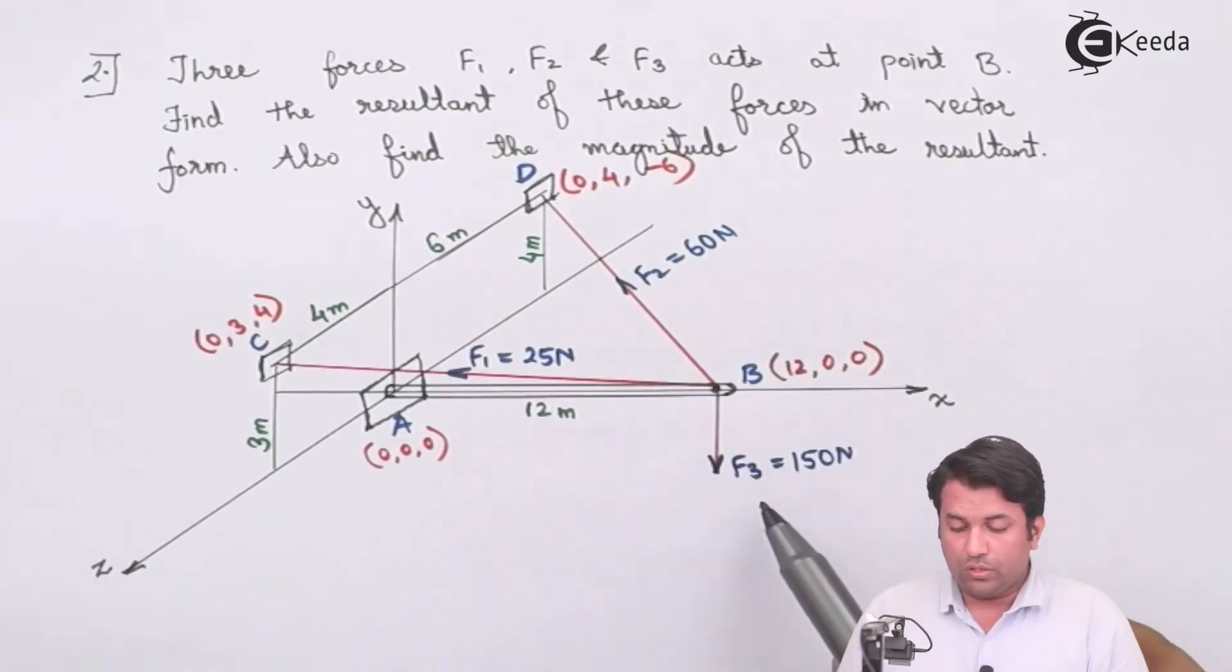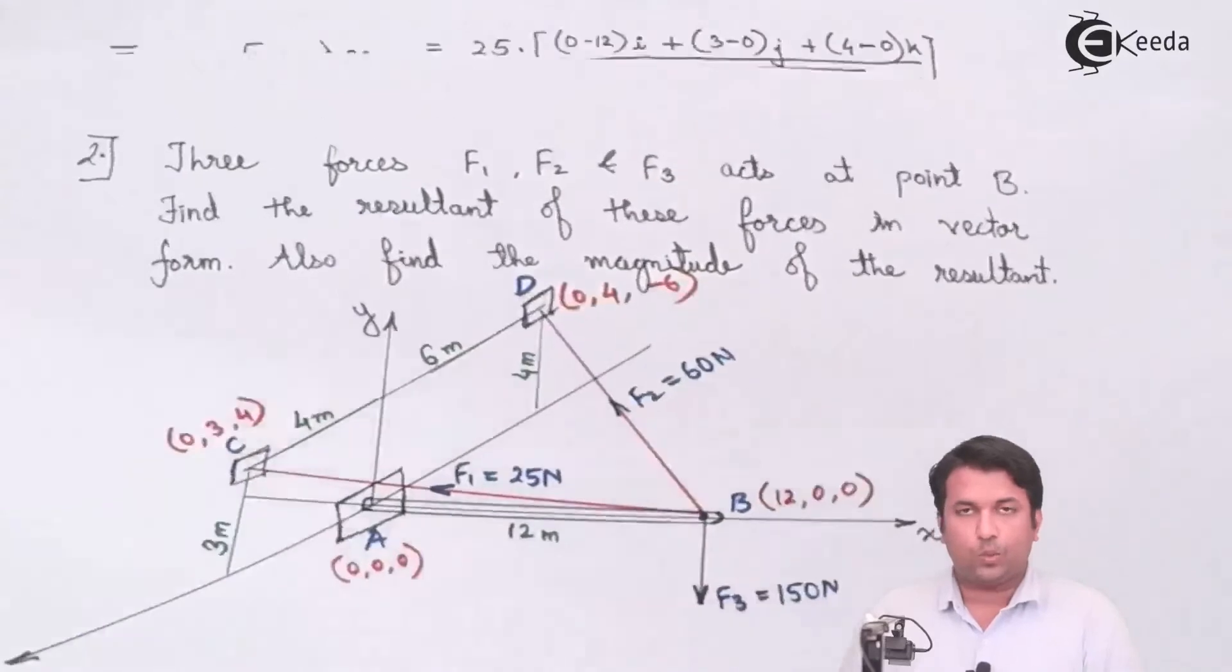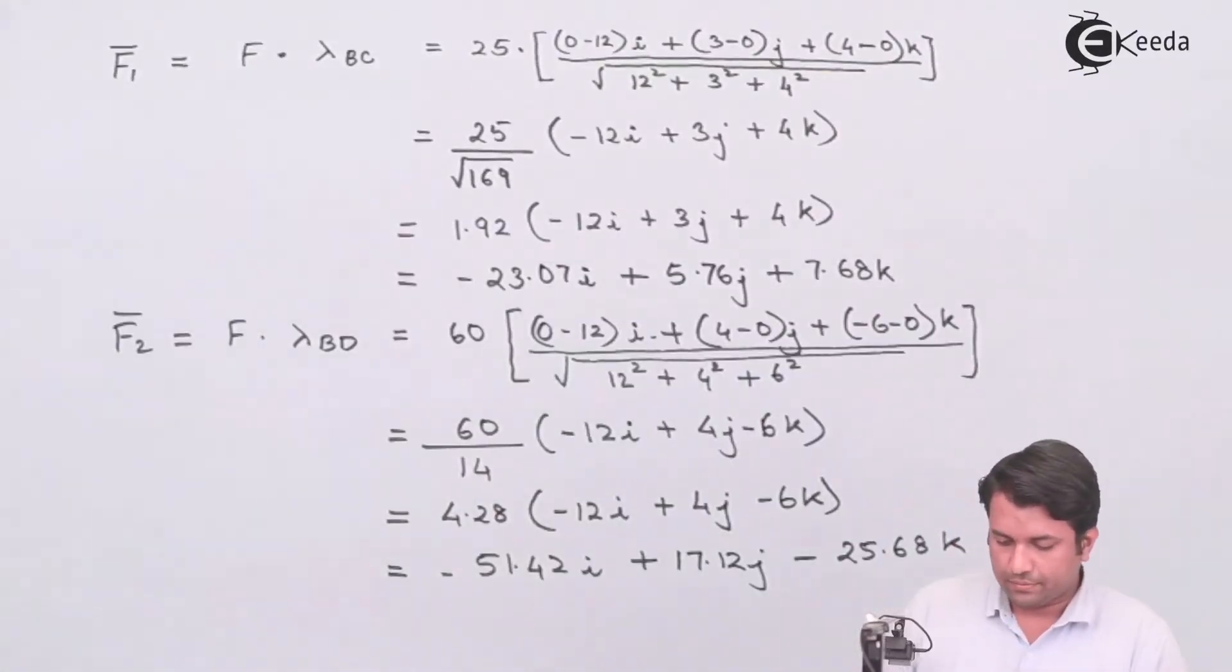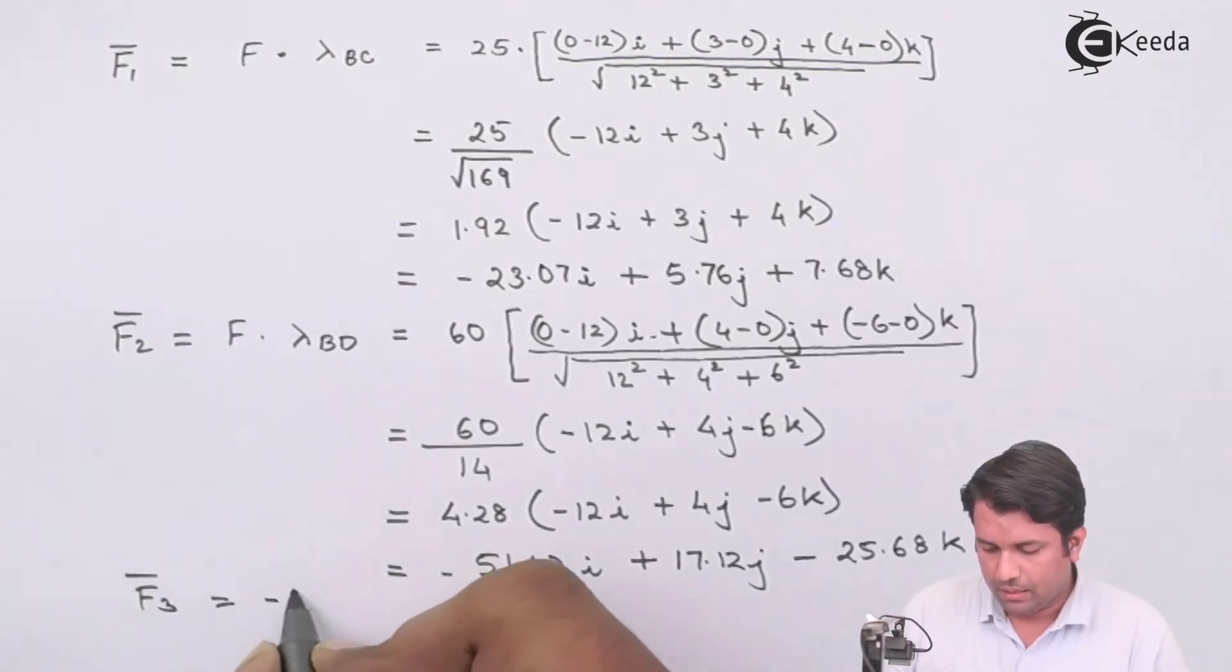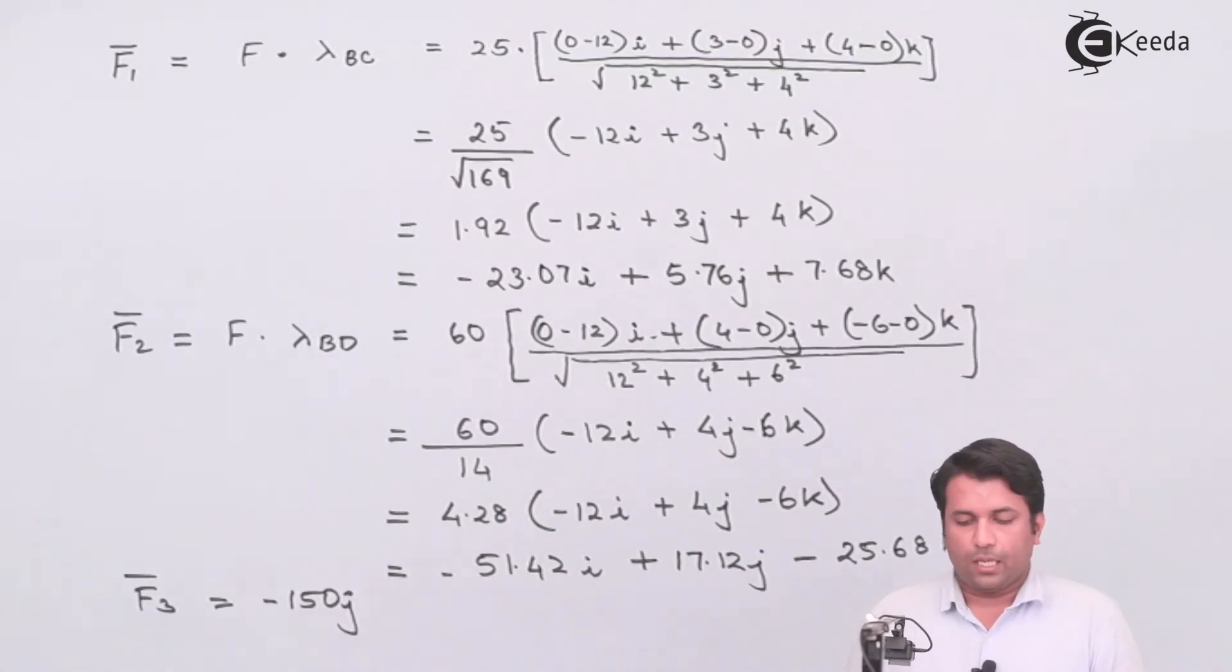Since it is acting downwards, the force vector will be -150j. So F3 is -150j.